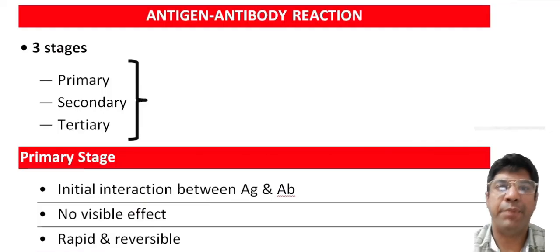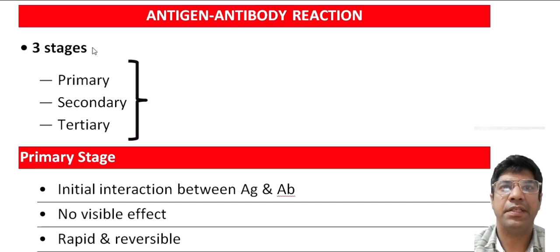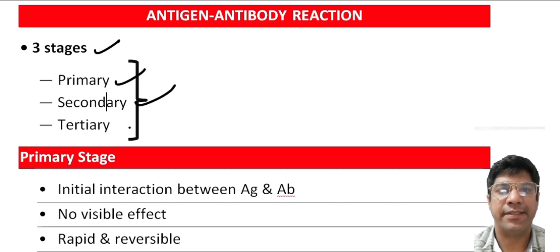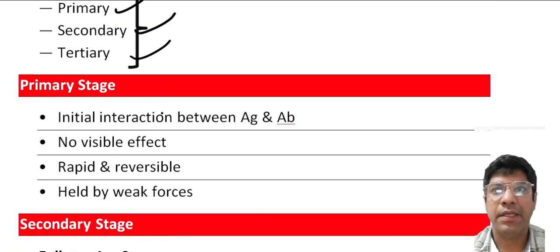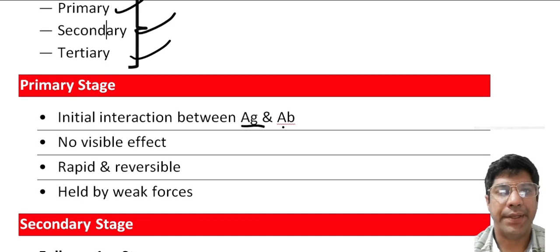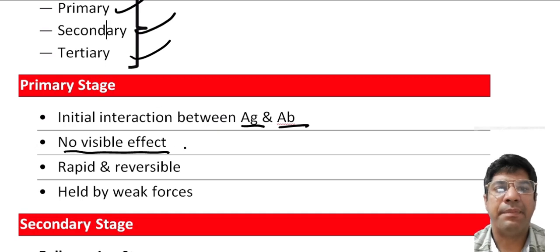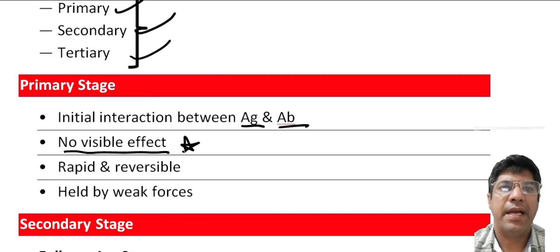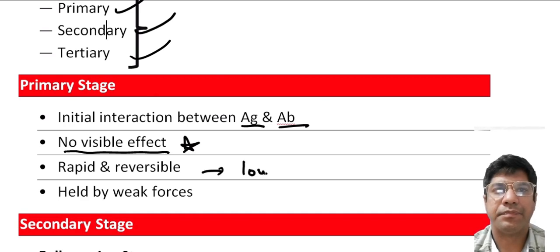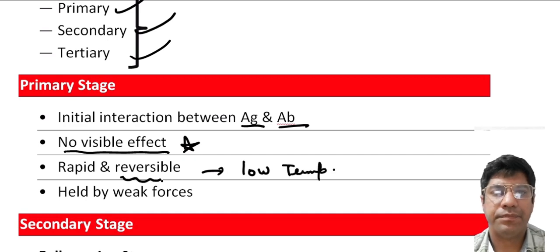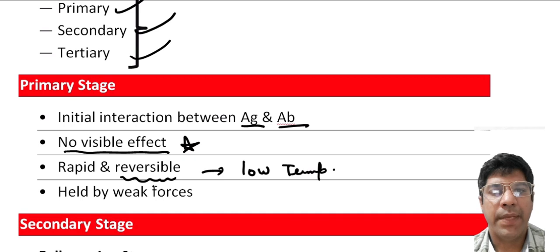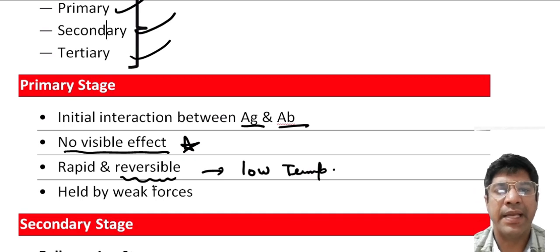Antigen-antibody reactions occur in three stages: primary, secondary, and tertiary. The primary stage is the initial interaction between the antigen and antibody — during this stage there are no visible effects or macroscopic changes. The reaction is rapid, can occur at low temperature, and is generally reversible. It follows the general laws of physical chemistry and thermodynamics. The interaction is primarily influenced by weaker intermolecular forces like van der Waals forces, ionic forces, and hydrogen bonding, rather than strong covalent bonding. The primary reaction can be detected using various physical and chemical methods, including use of markers such as radioactive isotopes and fluorescent dyes.